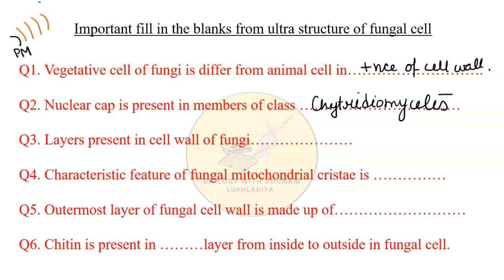When we read the layers from outside to inside, counting one, two, three, four — so the fill-in-the-blank asking how many layers are present in the cell walls of fungi — our answer is four.